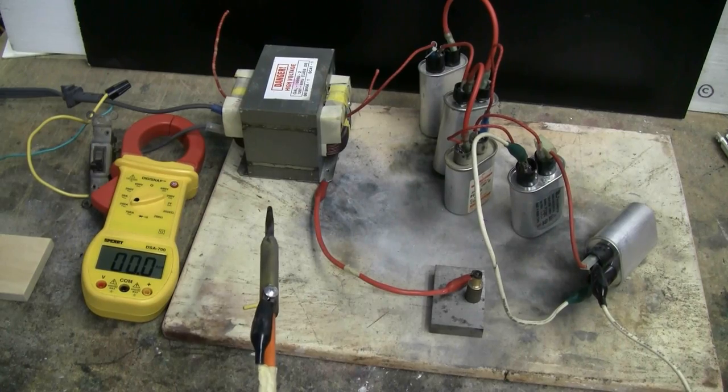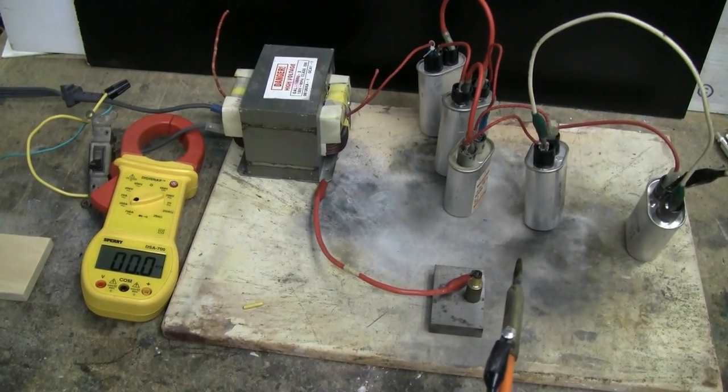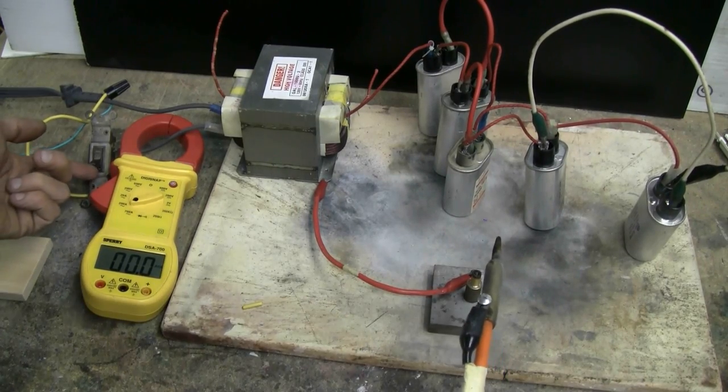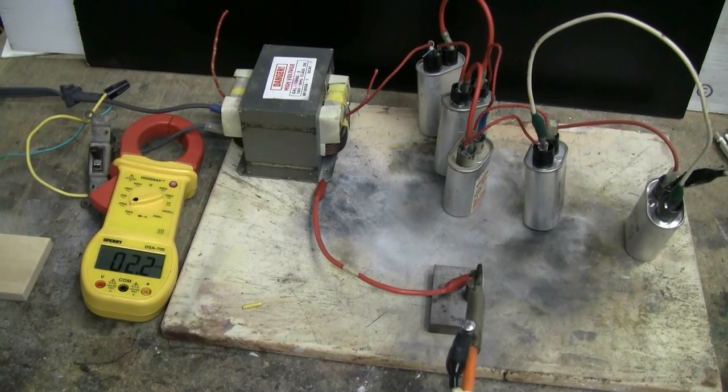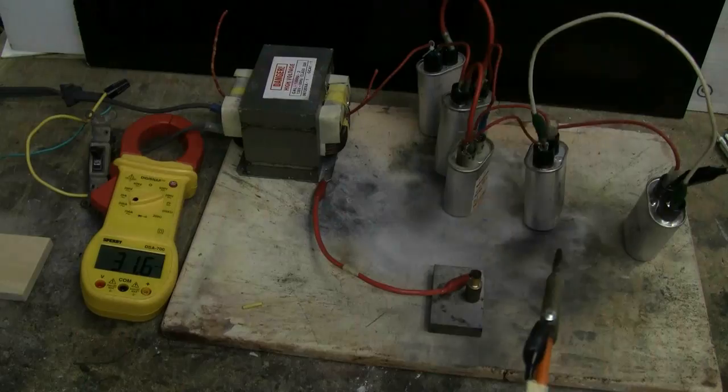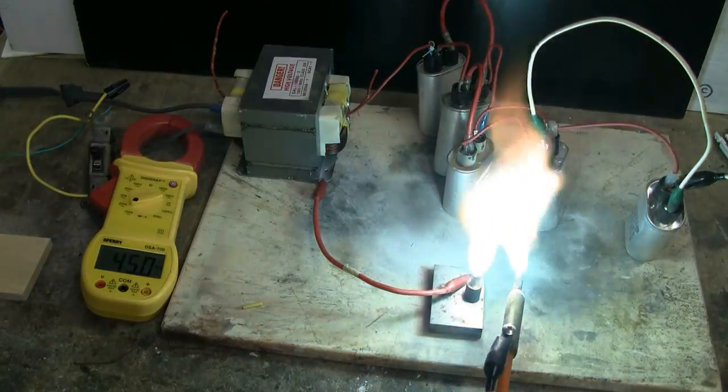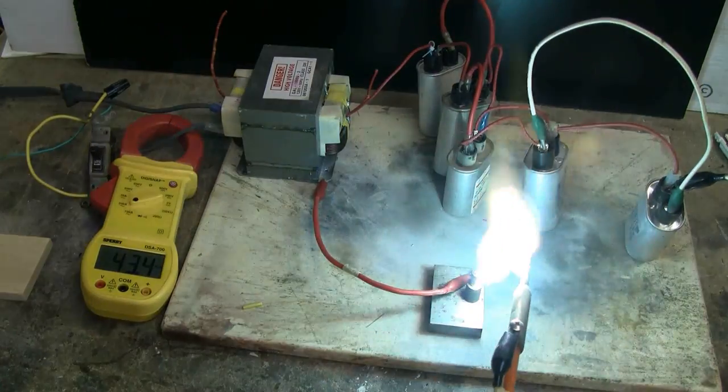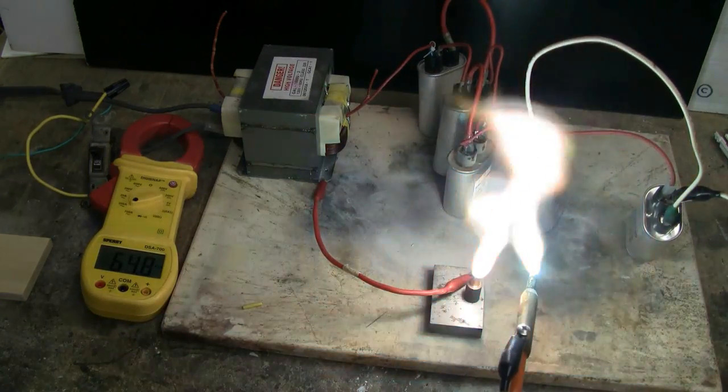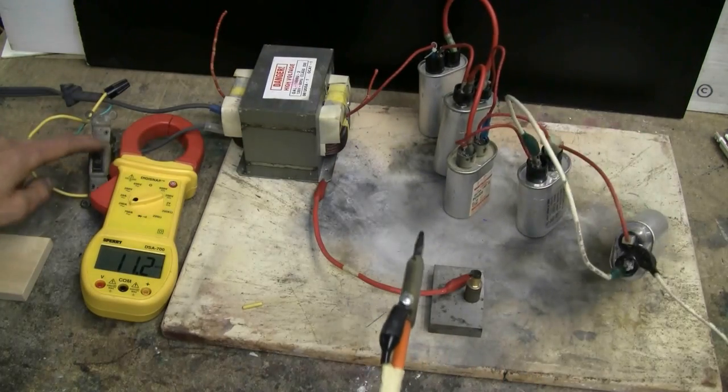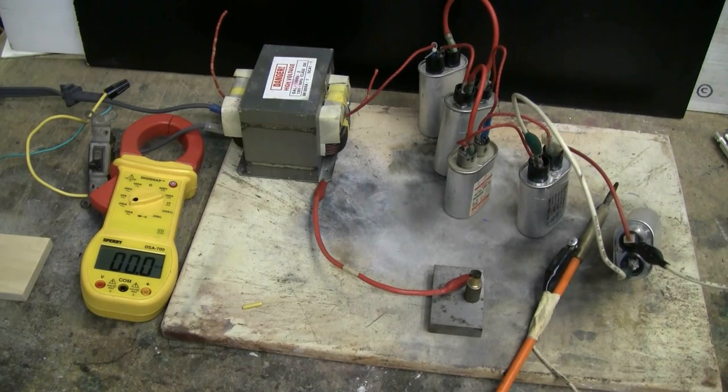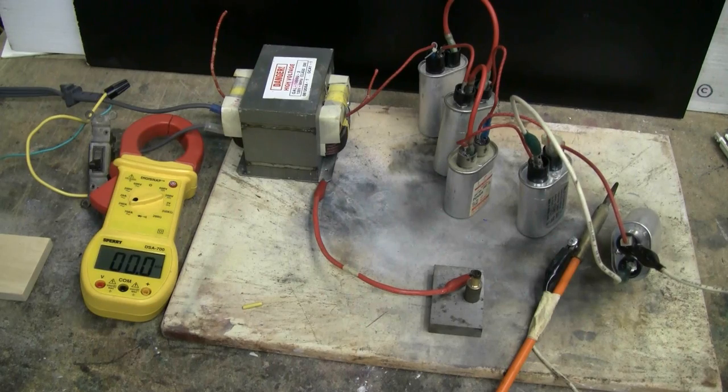The cap fell over. Got to reset up. Okay. Okay that capacitor is sort of standing back up again. Let's try this. And we were seeing up to 65 amps drawn on the primary side there.